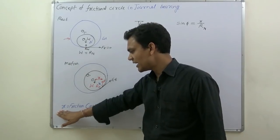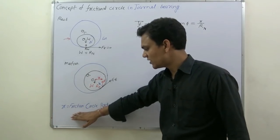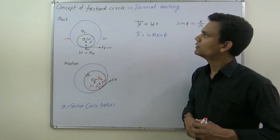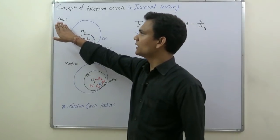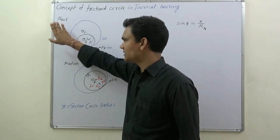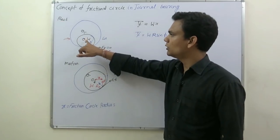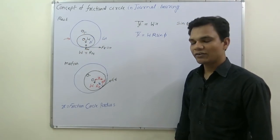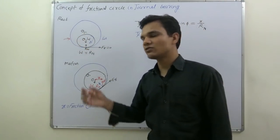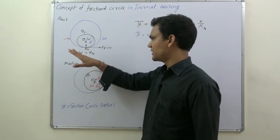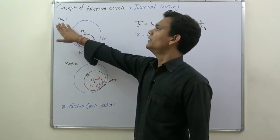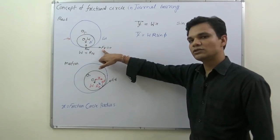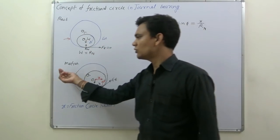The new term x is the friction circle radius. When the shaft is in the rest condition, the load and the normal reaction are on the same line of action — meaning the line of action of the load and the normal reaction are the same. Since the shaft is at rest, the friction force will be zero.